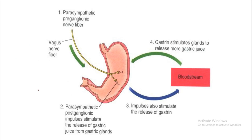In this figure you are going to see how stomach secretions are regulated by nervous as well as hormonal factors. Parasympathetic preganglionic nerve fibers supply the stomach, and parasympathetic postganglionic impulses stimulate the release of gastric juice from the gastric glands.